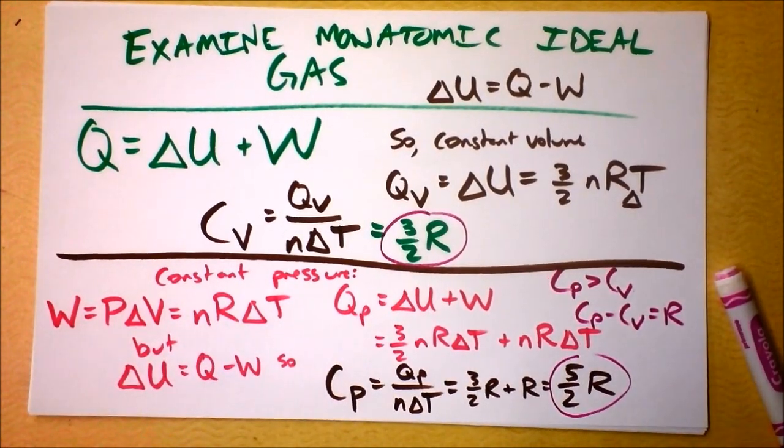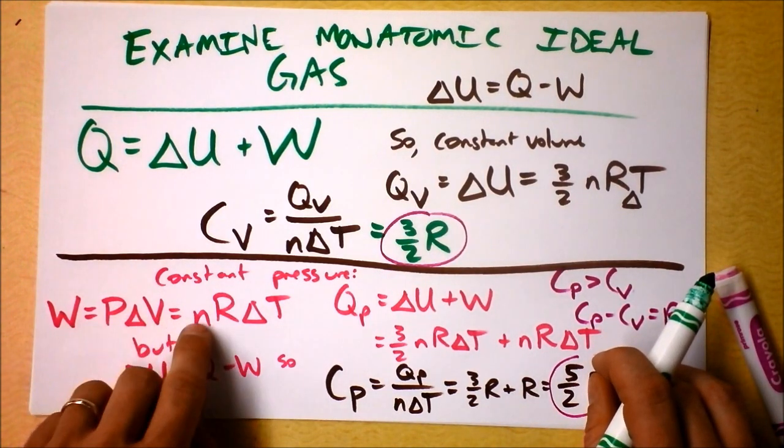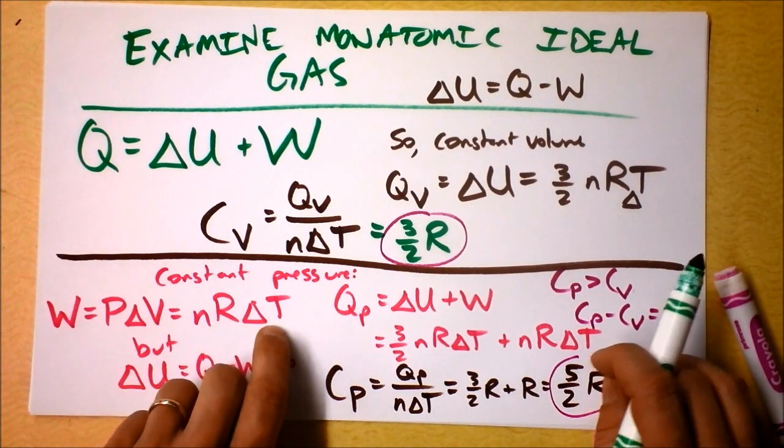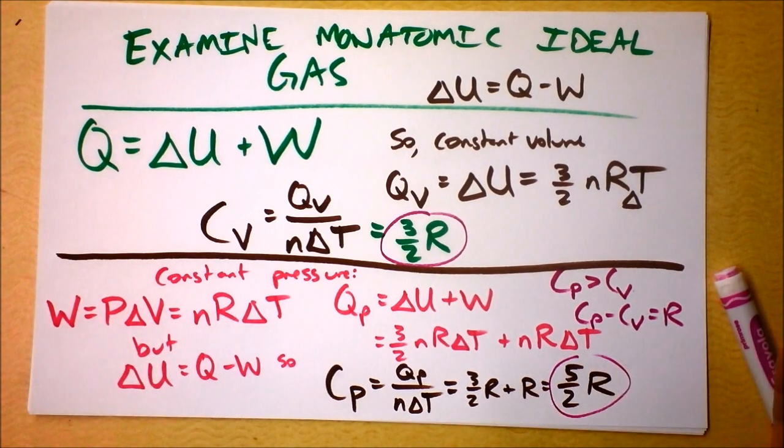So all we need to understand is why the work done by the gas was N R delta T. Can you tell me? Say it again. Why was the work done by a constant pressure gas, N times R times delta T? Because it equals PV. Oh, because that's PV. This is the ideal gas law. Wonderful. Goodbye.